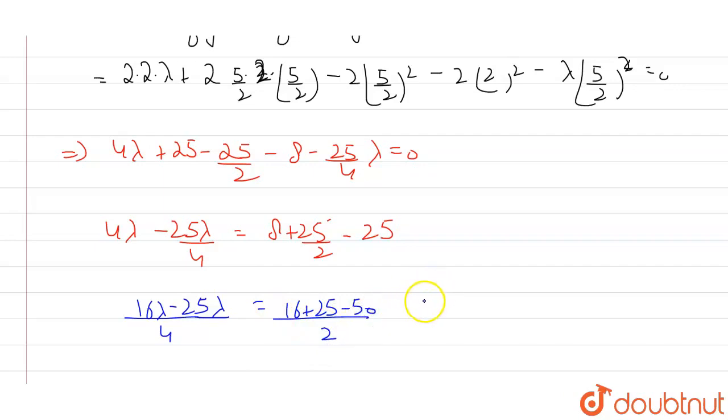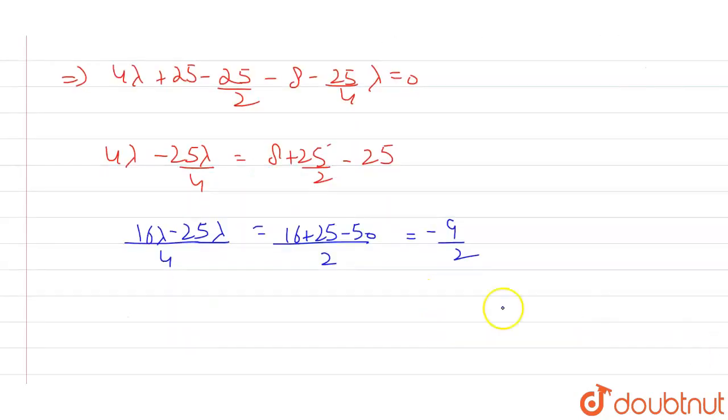16 plus 25 minus of 50 by 2. Okay, and which will come out as minus of 9 by 2. The right hand side. And here we have is what? Minus of 9 by 4 lambda is equals to minus of 9 by 2.